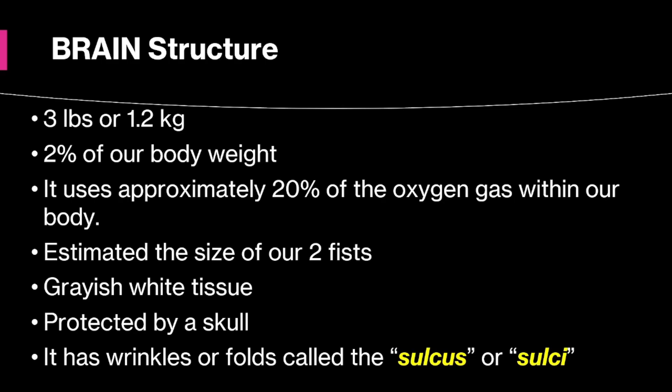Here are some fascinating facts about the brain. Did you know that the brain weighs only about 3 pounds? That's just 2% of your body weight, yet it consumes 20% of the body's oxygen. This is why regular physical activity can help improve concentration — when we increase oxygen flow, we help our brains function better. A baby's skull has around 300 bones, which fuse over time to form 206 bones in adults. This helps the brain grow in size, especially during the critical early years of life. Lastly, those wrinkles you see on the brain are called sulci. These wrinkles increase the brain's surface area, allowing it to process more information.